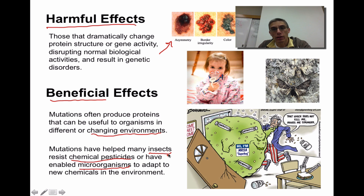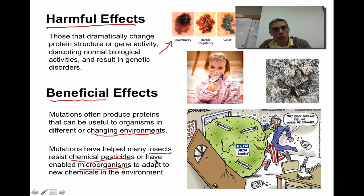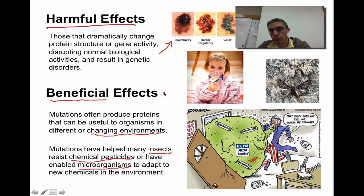Microorganisms like bacteria — there's a lot of bacteria out there right now that have become antibiotic resistant, meaning they've had mutations in their genetic material that allow them to be resistant to the antibiotics we try to use. We think of that negatively for us, but from the bacteria's perspective, they're trying to survive too — so for them it's a beneficial effect. Alright, that's going to finish up our third and final screencast for Chapter 13. Please make sure you have completed your screencast notes before you come to class.